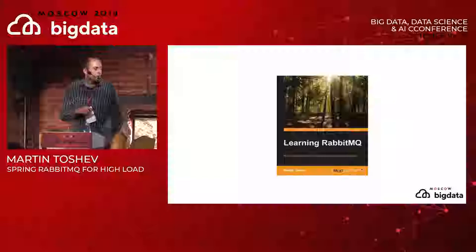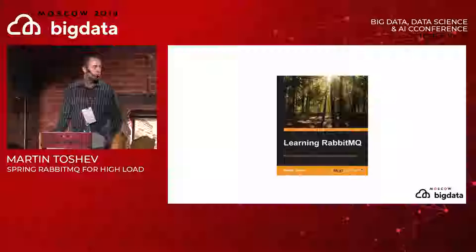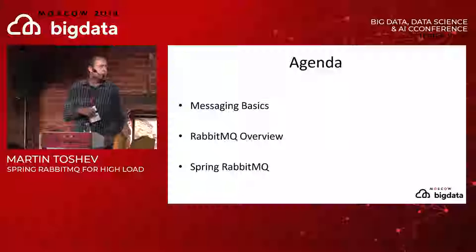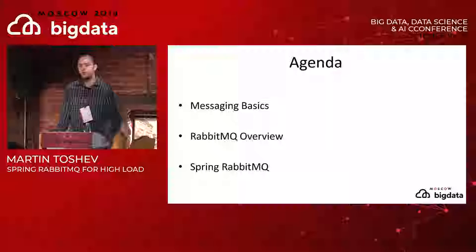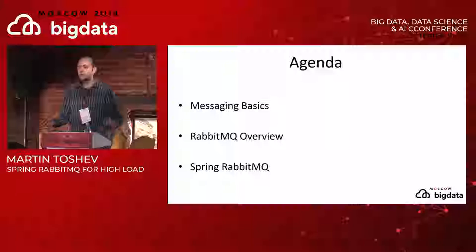For any questions you can use Slido - if you log into slido.com, the code you can use is 512, and you can write any questions during the session. We'll go over them at the end of this talk. We have fairly limited time, so I'll be fairly fast. First we'll cover some messaging basics, then a brief overview of how RabbitMQ works, and then some interesting examples of how you can build a high-load data processing pipeline using RabbitMQ and the Spring Integration framework.